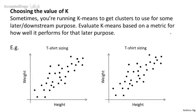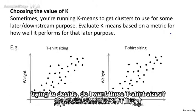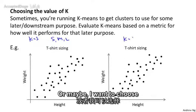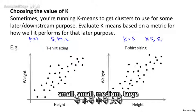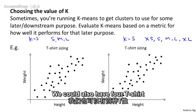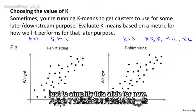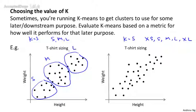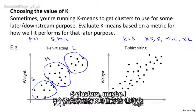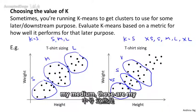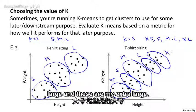Let's step through the t-shirt sizing example. I'm trying to decide: do I want three t-shirt sizes? If I choose k equals three, I might have small, medium, and large t-shirts. Or maybe I want k equals five, and then I might have extra small, small, medium, large, and extra large t-shirt sizes. Running k-means with k equals three might give me one grouping for small, medium, and large, whereas running k-means with five clusters might give me five distinct size groupings.